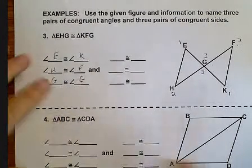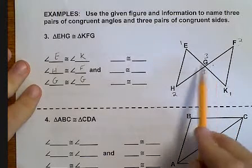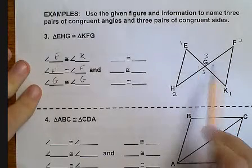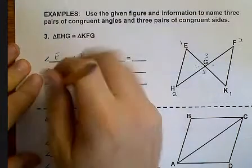Now, this last statement should be obvious, that G is congruent to G. But in actuality, we're talking about two different angles over here.